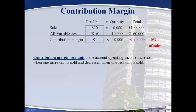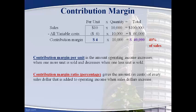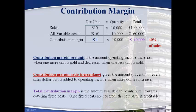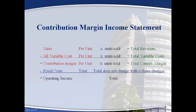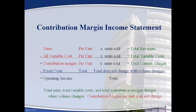The contribution margin per unit is the amount that is added to operating income with one more unit sold; operating income will decrease when one less unit is sold. The contribution margin ratio is the amount of every sales dollar that is added to operating income when sales increase. Total contribution margin is the amount available to contribute towards covering fixed costs. Fixed costs that do not change when volume changes are subtracted from contribution margin to compute operating income, and total contribution margin and operating income will change when the number of units sold changes.